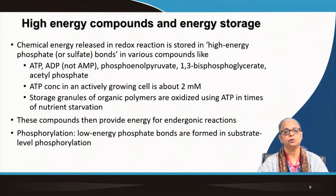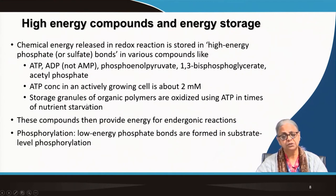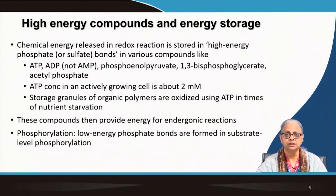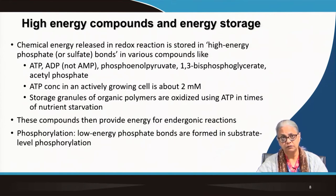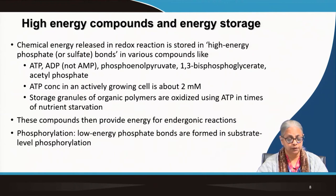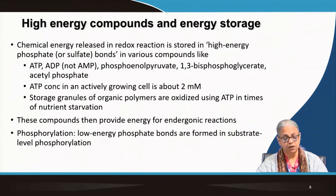ATP concentration in an actively growing cell is 2 millimolar. Storage granules of organic polymers can be oxidized using ATP when there is nutrient starvation. These high-energy compounds can provide energy for endergonic reactions, which is why they are so important. Low-energy phosphate bonds are formed in what is called substrate-level phosphorylation.